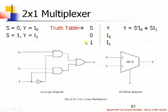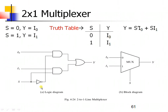This is the truth table for the 2-to-1 multiplexer. From the truth table we can derive the Boolean expression. Plotting the truth table on a K-map gives the expression: Y = S'·i0 + S·i1. Using this Boolean expression, we can implement the logic gate design using two AND gates, one inverter, and one OR gate.